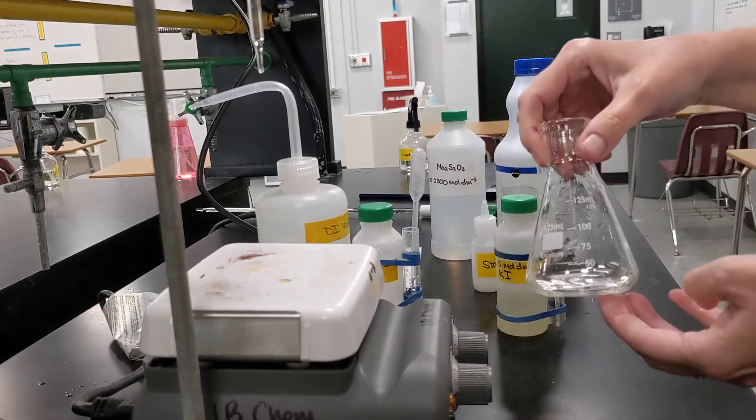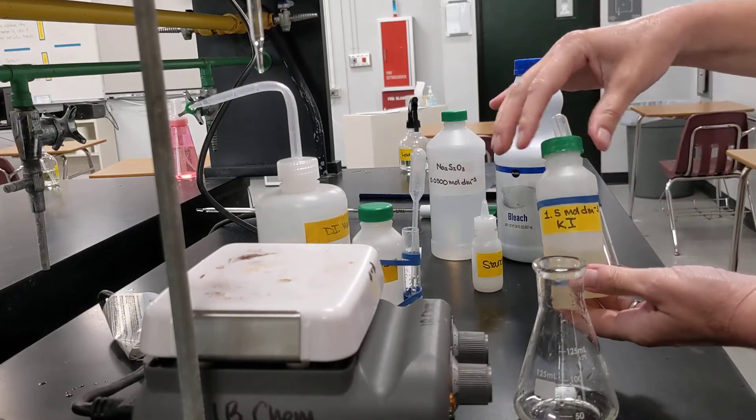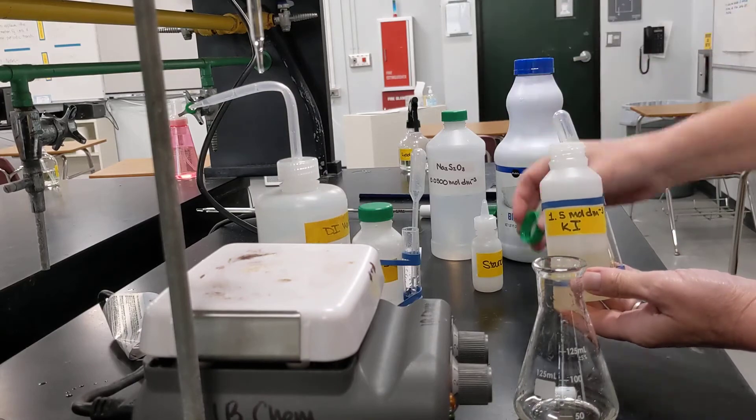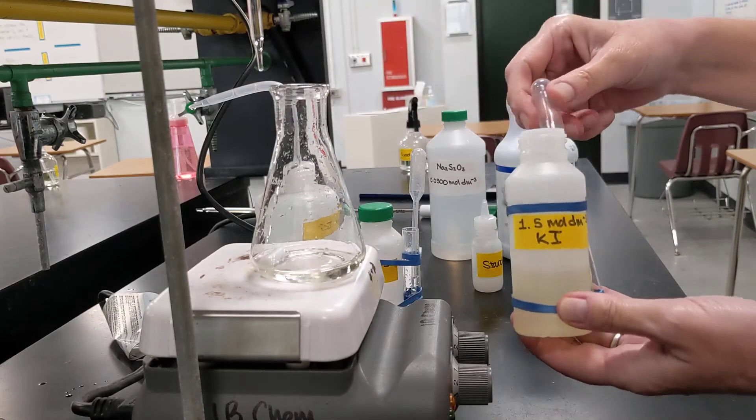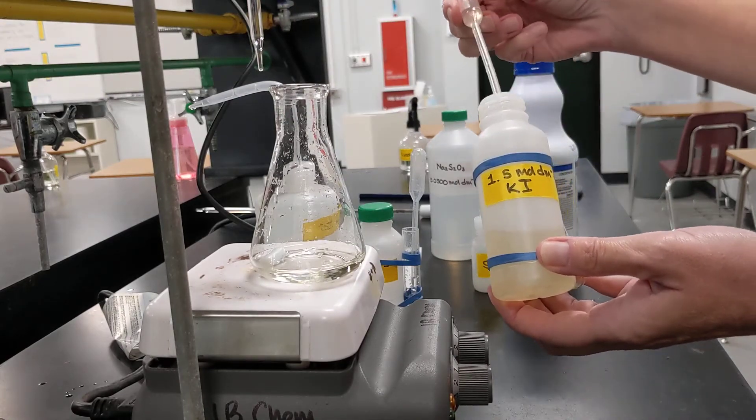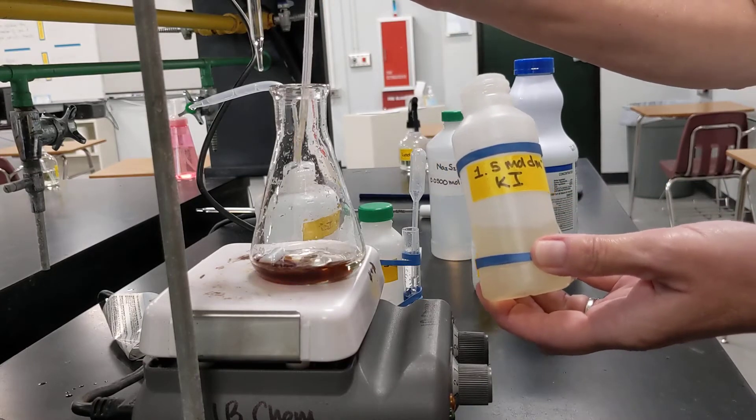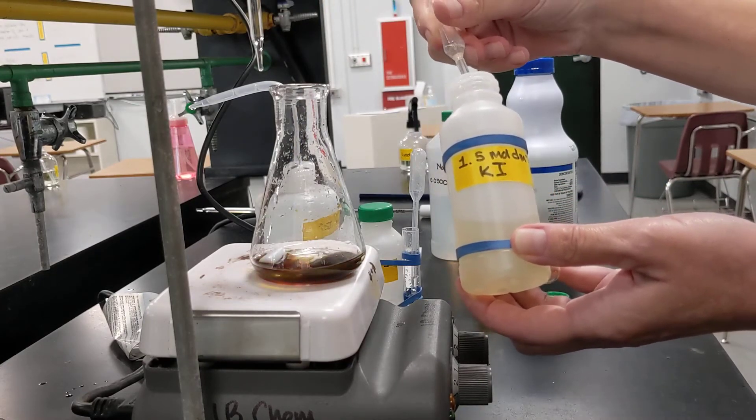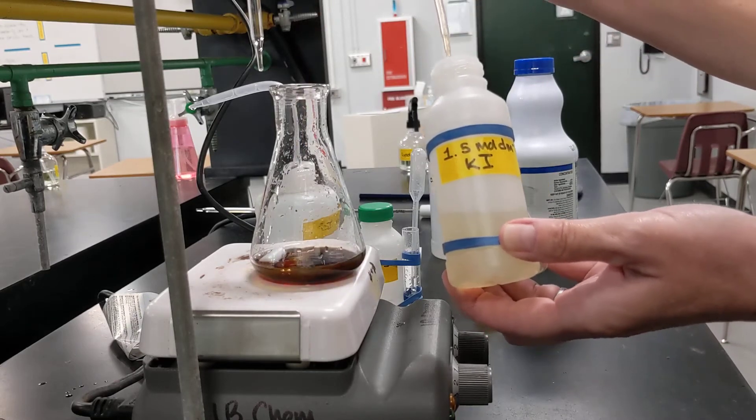And then the next thing I'll add is some 1.5 molar KI. And when I add this, let me put it up here, we will see the difference between a redox titration and an acid-base titration. The minute I add, the second I add that KI, we see a drastic color change.